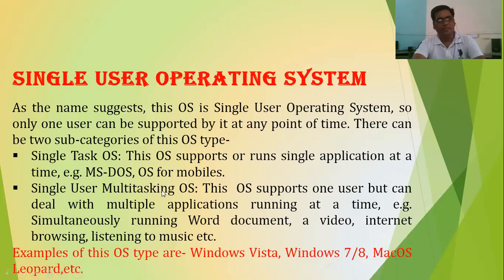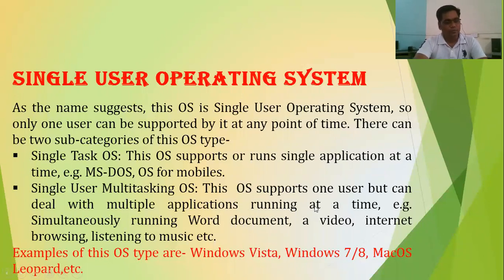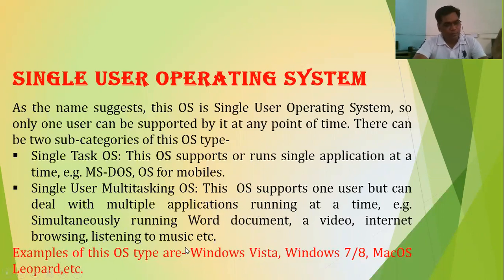Single user but multi-tasking OS supports one user but can deal with multiple applications running at the same time. You might have noticed while working on your computer that you can run a Word document, open a video, do internet browsing, and listen to music all at the same time — that is called multi-tasking. Examples of this OS type are Windows Vista, Windows 7, Windows 8, and Mac OS Leopard.